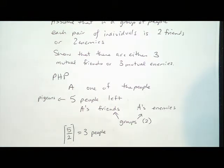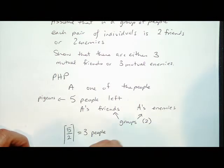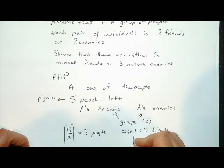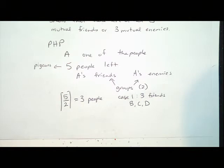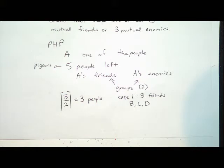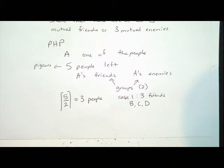Let's look at case one: we have three friends — call them B, C, and D. When we say mutual friends, that means all pairs are friends. If A, B, C are all mutual friends, then A is friends with B, A is friends with C, and B is friends with C. The friends relation is symmetric. So if any two of B, C, D are friends with each other, they're already friends with A, giving us a group of three mutual friends — say A, B, and C. If no two of them are friends, then B, C, D are mutual enemies.